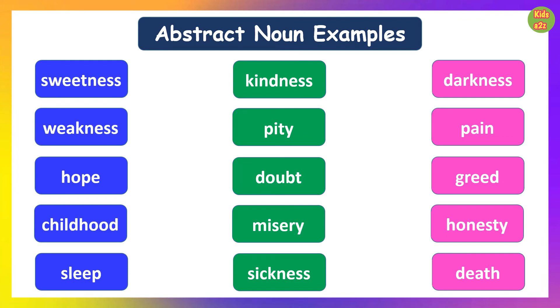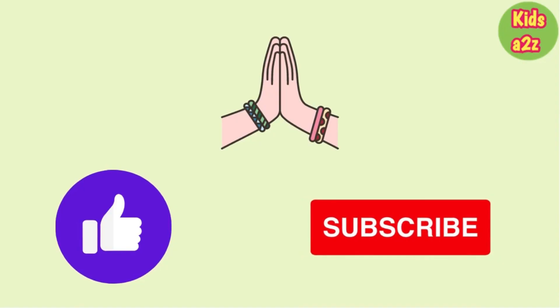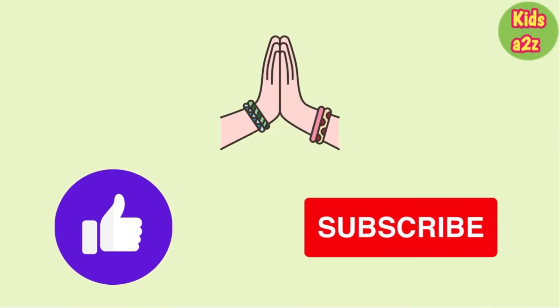So, we have learned that abstract nouns are nouns which cannot be identified by using our five senses. Thanks for watching Kids A to Z.